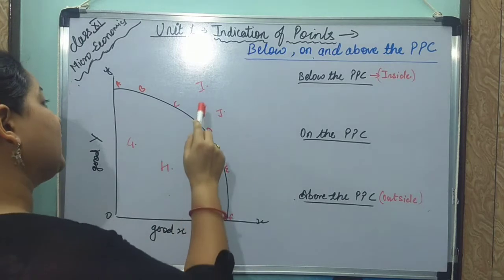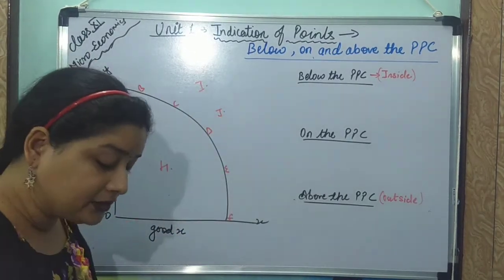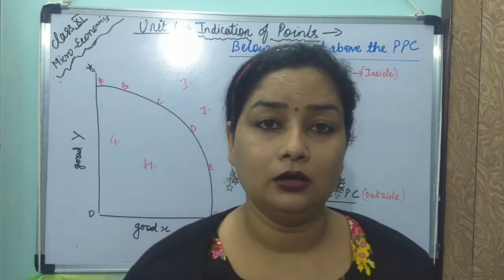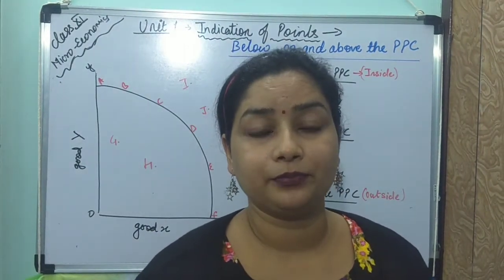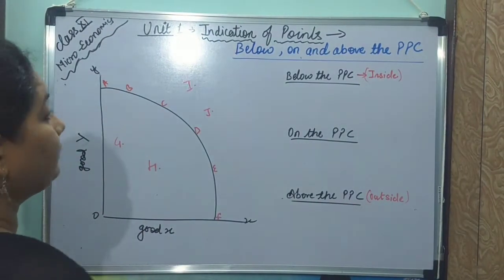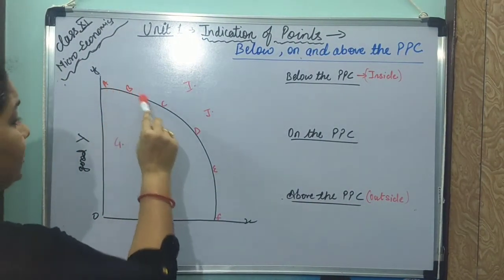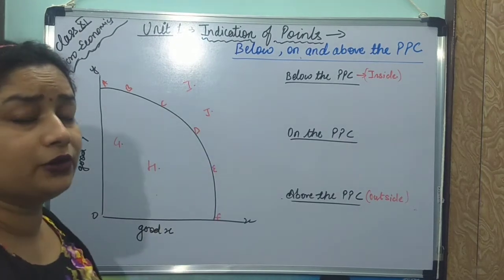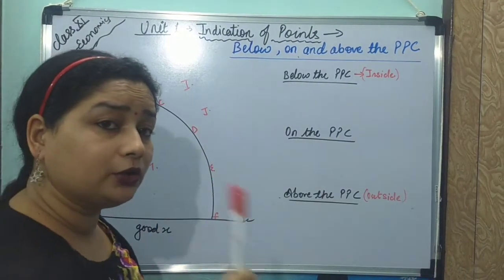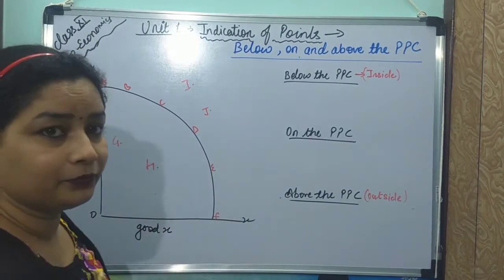Can the economy ever be outside the PPC? The PPC itself states that on its points, all resources are fully utilized. So when resources are already fully utilized, how can we go beyond that point? We cannot go outside, because all resources have already been used up. So it is not possible to operate outside the PPC given current resources.